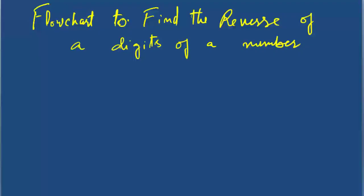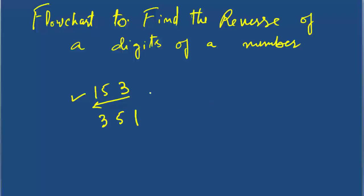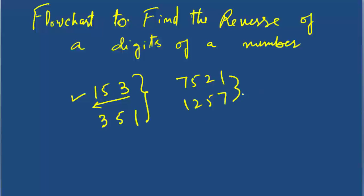Welcome back to In This Technologies. In this tutorial we are going to find the reverse of the digits of a number. Suppose I have 153 and I want to reverse its digits — it will become 351. Or if I have 7521, it should become 1257. So the digits of a number should get reversed.